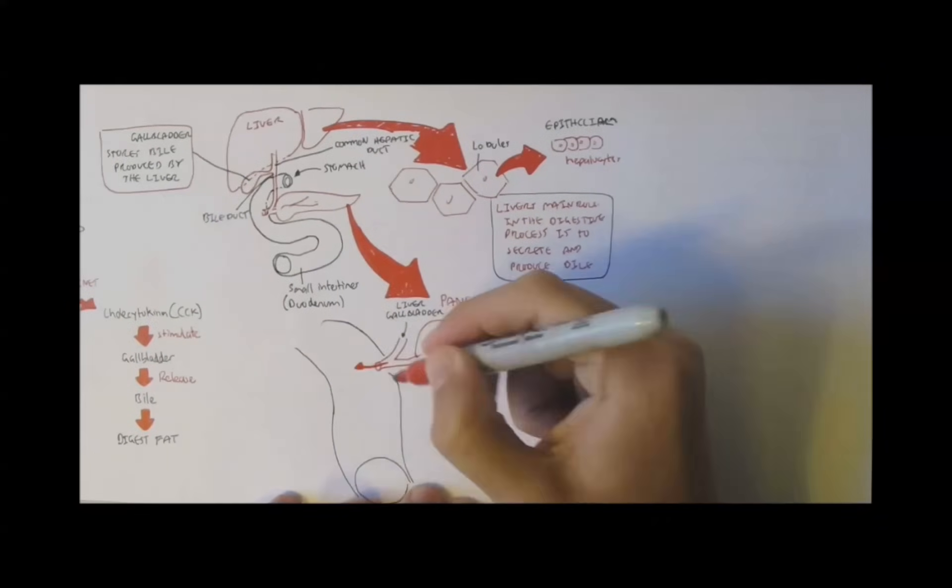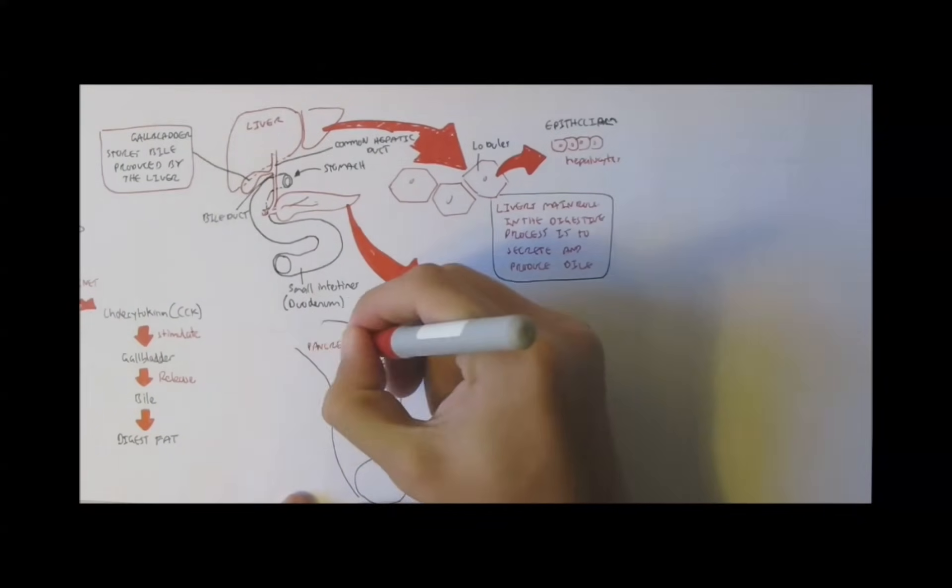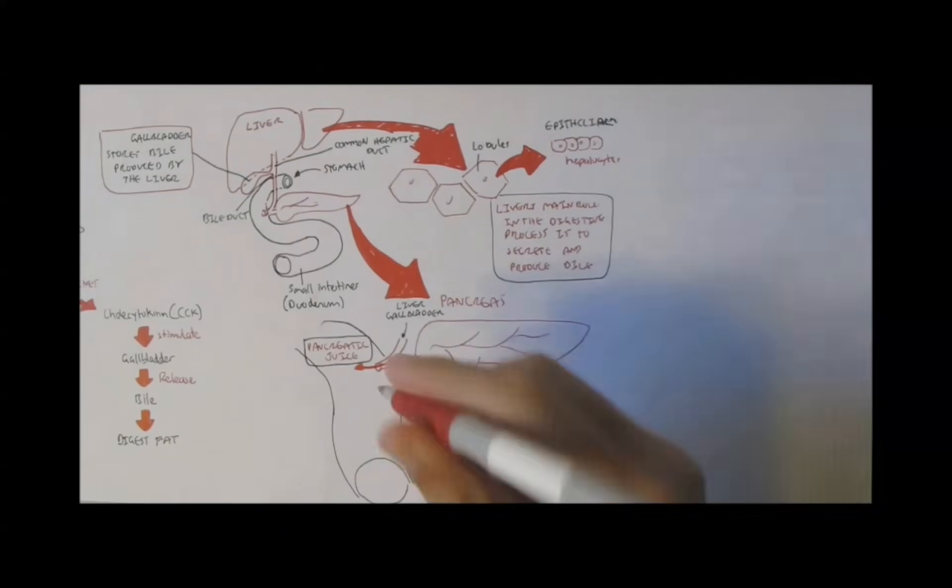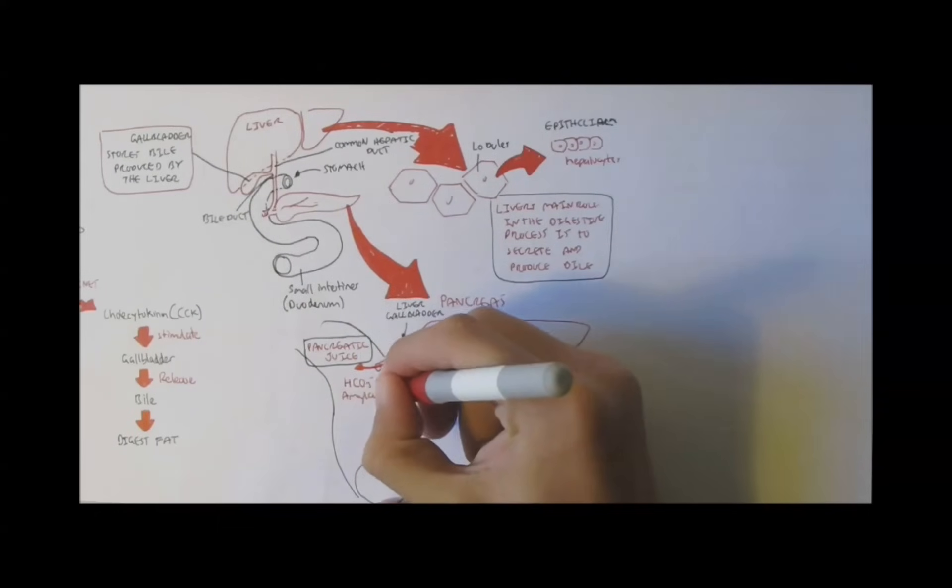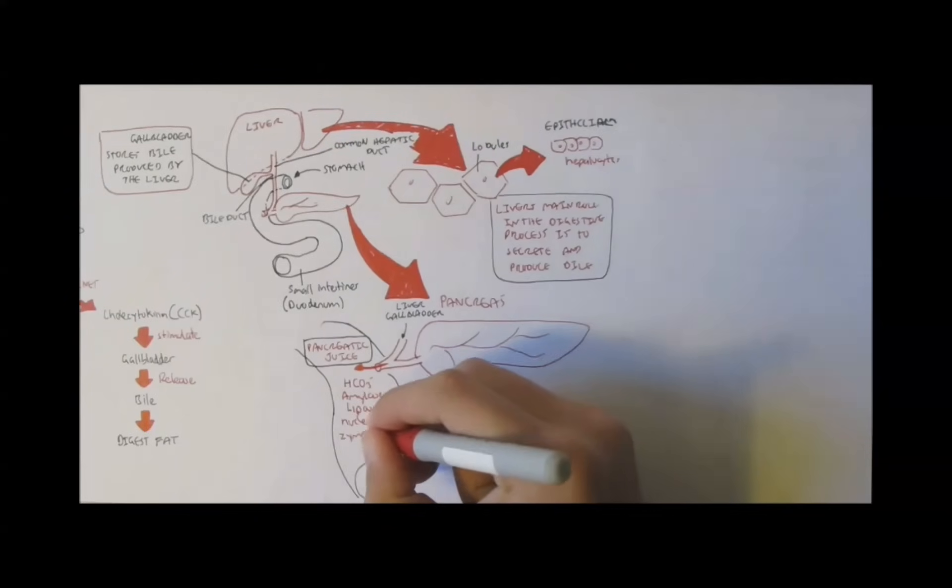The pancreas secretes pancreatic juice, which consists of many chemicals, enzymes, and zymogens. Notably, bicarbonate, amylase, lipases, nucleases, and zymogens, or inactive enzymes.